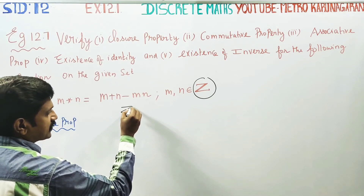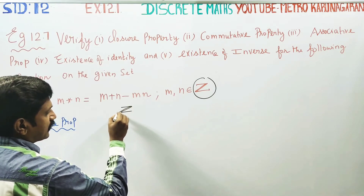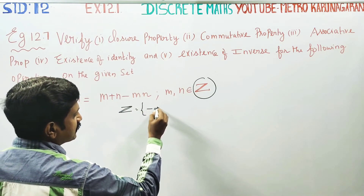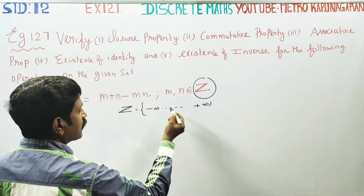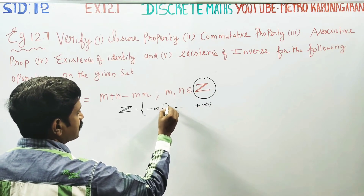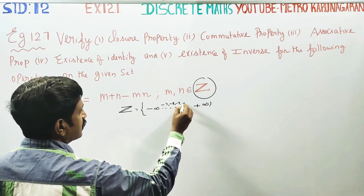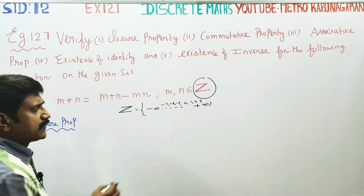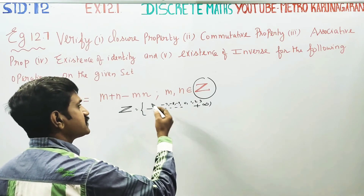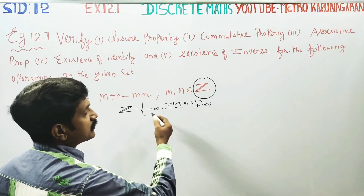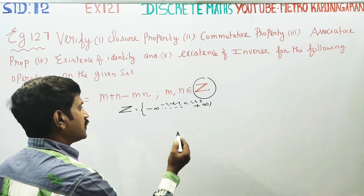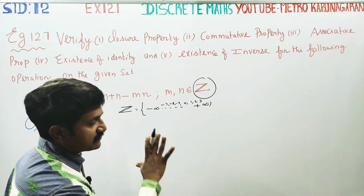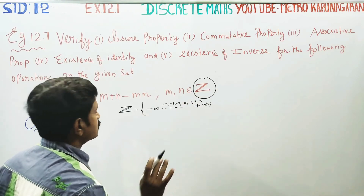I am going to start with closure property. What is the meaning of closure property? The result must belong to the same set — in this case, the set of integers. Integers cover all numbers from minus infinity to plus infinity: negative numbers, zero, one, two, three, and so on. The result must be only integers.